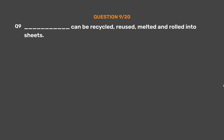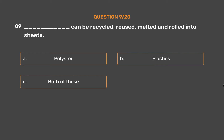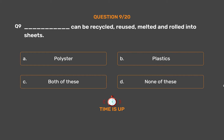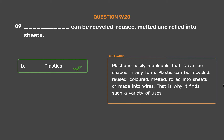Question Number 9. ___ can be recycled, reused, melted and rolled into sheets. Option A: Polyester. Option B: Plastics. The correct answer is Option B: Plastics. Plastic is easily moldable — that is, it can be shaped in any form. Plastic can be recycled, reused, colored, melted, rolled into sheets or made into wires. That is why it finds such a variety of uses.